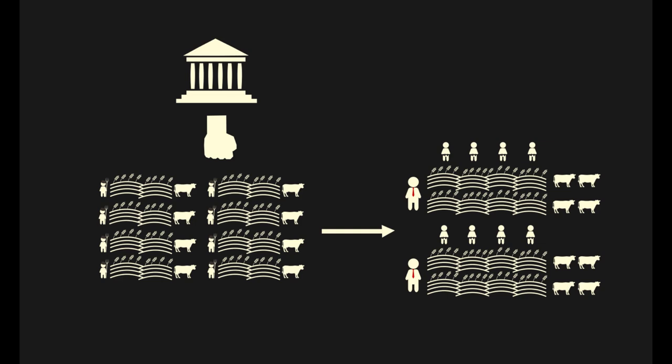After all, what authoritative body reinforces the right to private property if not the state? If the state was not around to prop up this right, people would ceaselessly take advantage of land that has been marked as privately owned, or in the modern example, private assets like intellectual property.